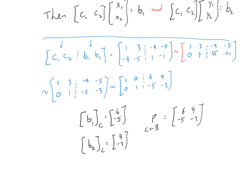If I needed the other direction — the other change matrix — I have two choices. I could flip-flop the augmented matrix, putting b1, b2 on the left and reducing, which gives the change matrix in the other direction. Or I can take this 2×2 matrix and invert it. Either approach produces the change matrix going in the other direction.